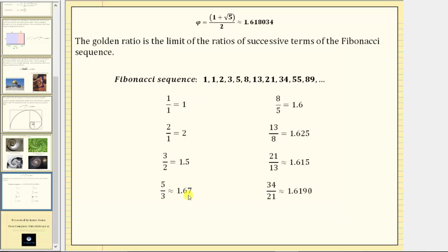These values are getting closer to the value of the golden ratio, which is approximately 1.618. Continuing, we have eight divided by five, which is 1.6.